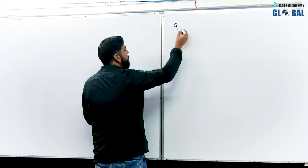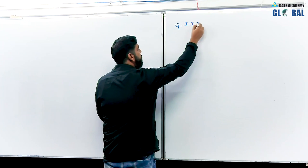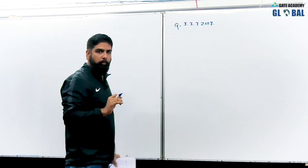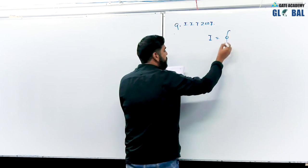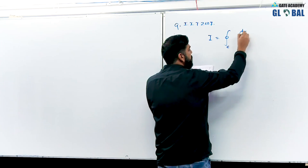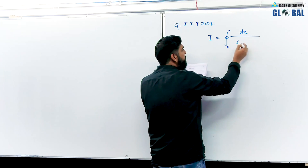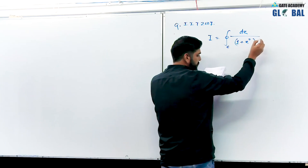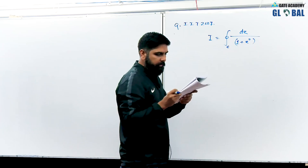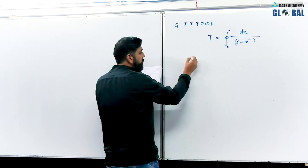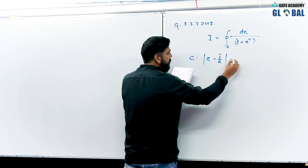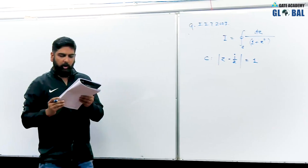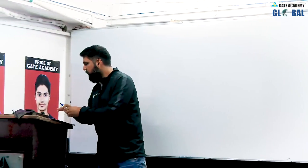This question is asked for 2 marks. Let us start the question. I am having the integral I equal to the closed complex integral over curve C of dz divided by 1 plus z square, where C is the contour defined as mod of z minus i by 2 equal to 1. We are having options: 2 pi i, pi i, 10 inverse z, and other varieties.